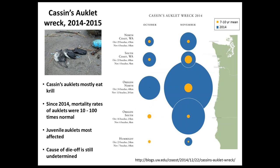Another seabird indicator possibility, shown to the Council last year, is the number of dead Cassin's auklets that washed up on Northern California Current beaches, depicted with circles where size indicates extent of mortality relative to long-term averages. In October and November, the blue circles indicate a much larger number of dead birds than the long-term average. This could be associated with the warm blob and other climate anomalies observed over the last couple of years, but the mechanisms behind this are still to be determined.